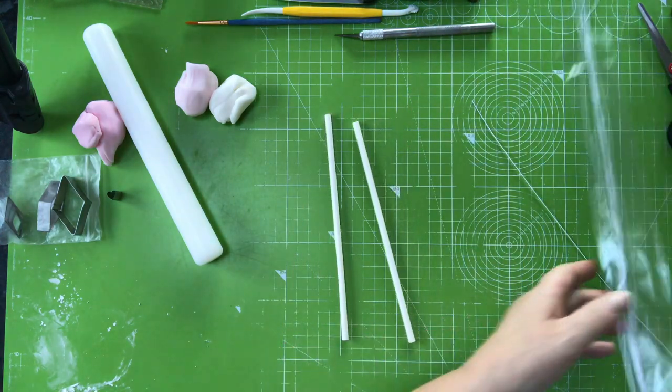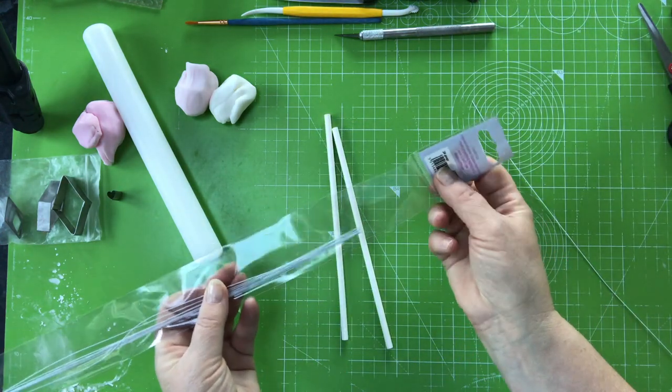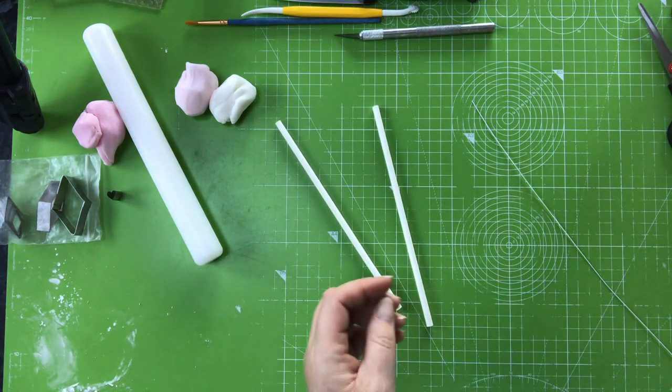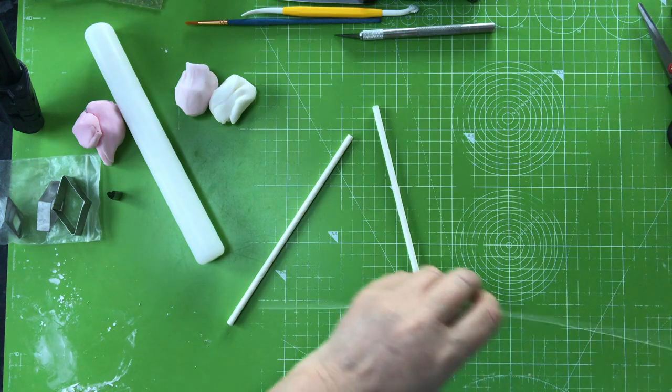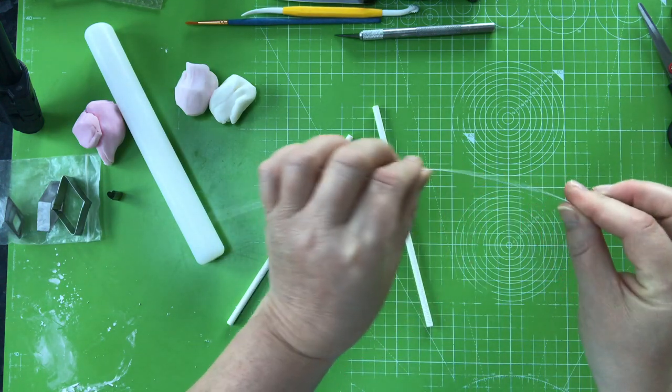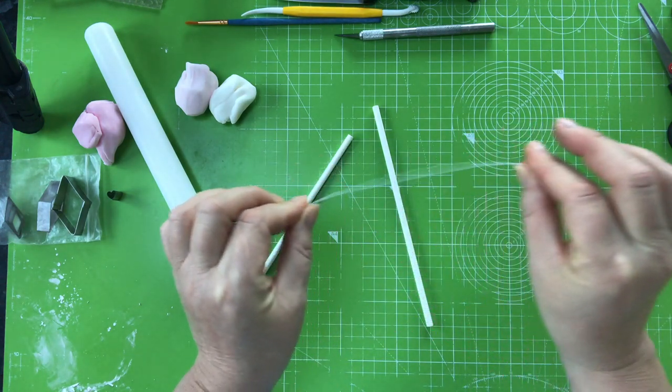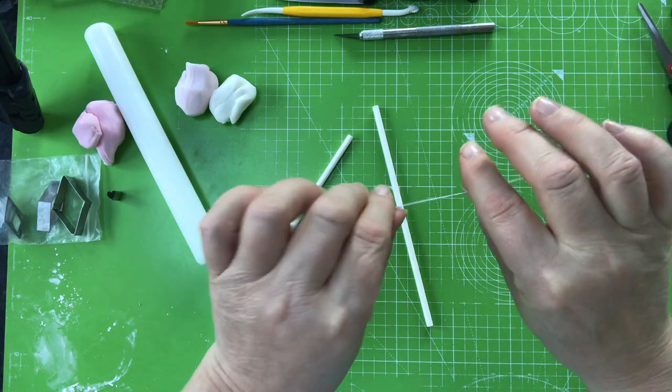You'll also need wire. I use a 28 gauge for when I'm doing this. Grab your wire and just bend it a little bit, you know when you're curling anything so it's got a little bend in it to begin with.